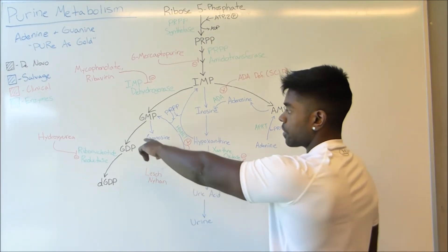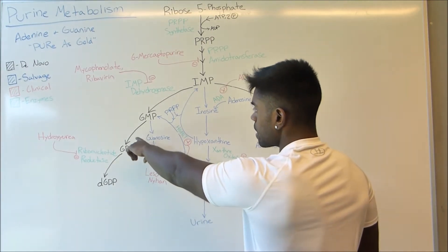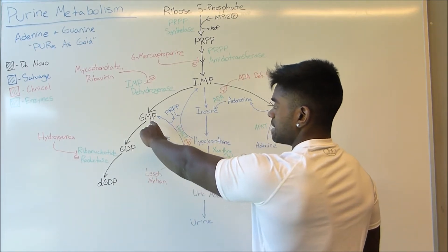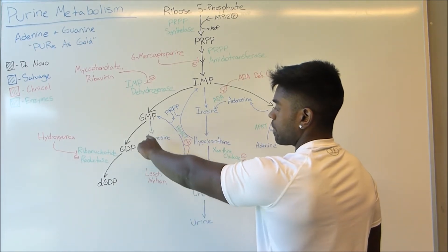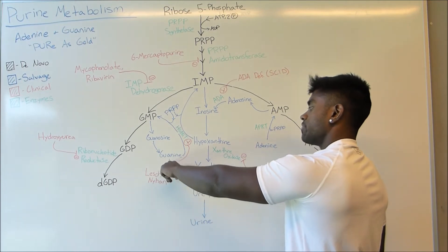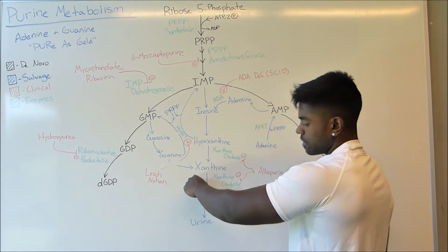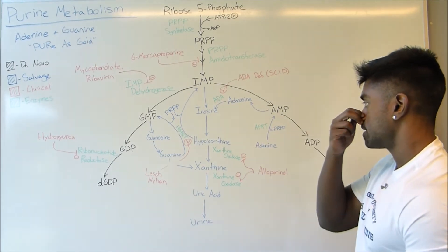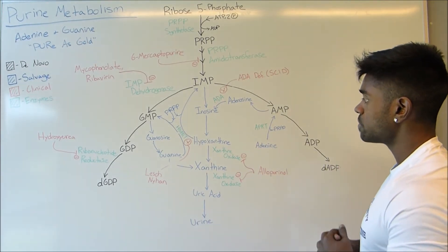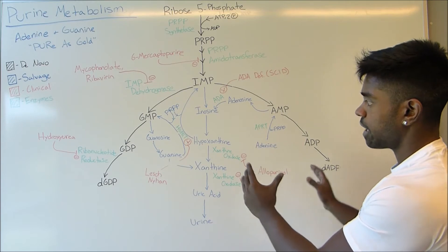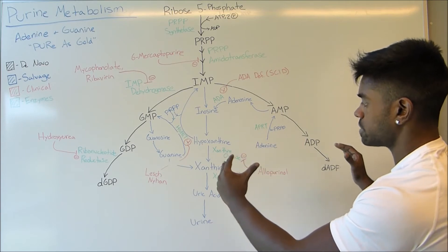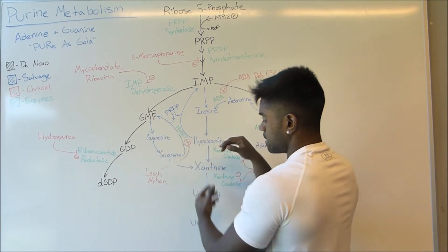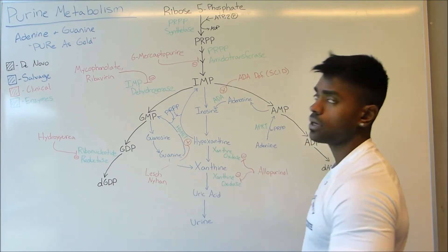With GMP, instead of going back around during the salvage pathway, guanine is going to be converted to xanthine, and then xanthine is going to go towards the urine using that pathway of xanthine oxidase as well. Right there is pretty much how these molecules are broken down. If we understand that they pretty much come in and stem into this one pathway, it makes a lot of sense.